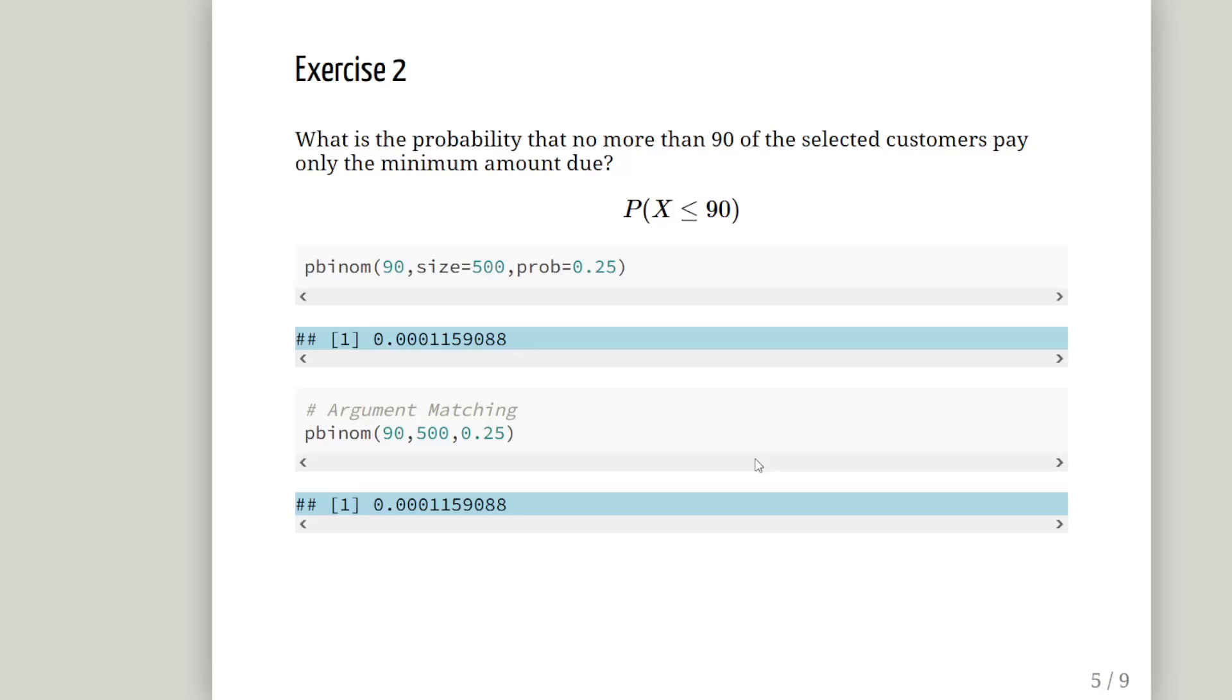What is the probability that no more than 90? So we include 90 in our interval of the selected customers pay only the minimum amount due. This is very straightforward. In this case, it's 1 to 90, or actually 0 to 90. pbinom 90 size equals 500 probability equals 0.25. So it's actually a very small probability. It is 0.000116, so it's almost one-eighth of a percent, almost 1 in 800.